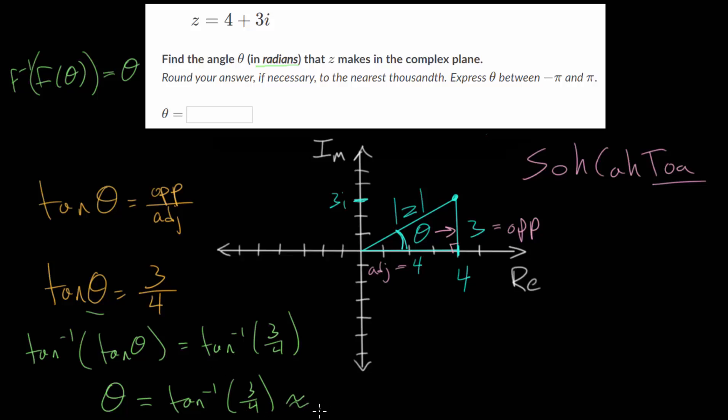And once you evaluate this on the calculator, you will get 0.6435, but we're rounding to the nearest thousandth. So we will round up to 0.644. And again, the units on this is radians.